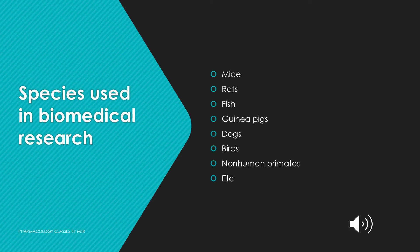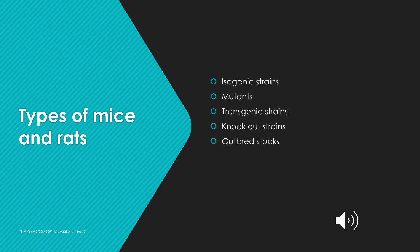Some of the species used in biomedical research include mice, rat, fish, guinea pig, dogs, birds, and non-human primates. The different types of strains include isogenic strains, mutant strains created by mutations, transgenic strains created by gene transfer, and knockout strains where specific genes are removed. All these are different types of strains used in research.